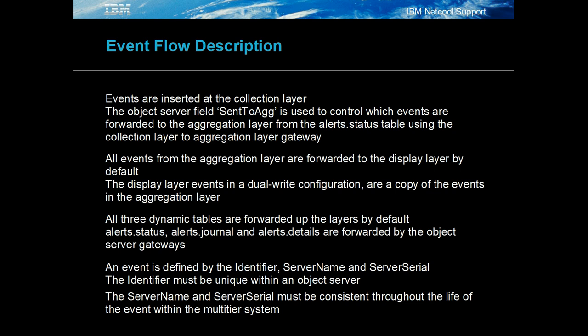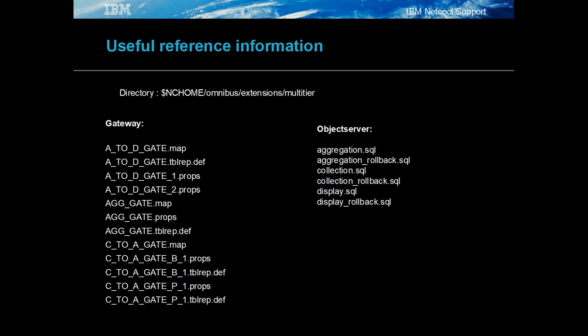By default, all three dynamic tables are propagated between the layers, although it is recommended that alerts.details is not propagated for production systems. An event within the multi-tier system is defined by the identifier, server name, and server serial fields. The multi-tier configuration is provided as a set of files within the multi-tier directory found in the omni-home directory, including object server SQL files and gateway configuration files. Typically the system is built on multiple servers, with gateway configuration files copied to a suitable name directory in omni-home gates, with property file paths updated accordingly.